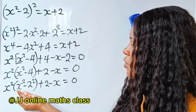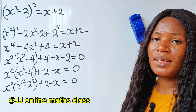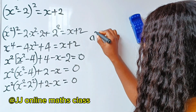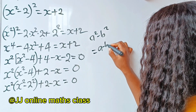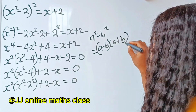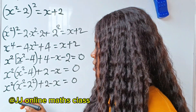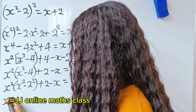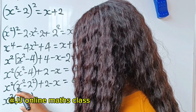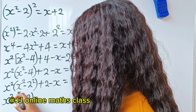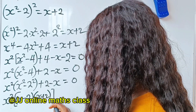Now you can see that we have a difference of two squares inside these brackets. So what we are going to do is apply the identity. The identity of a squared minus b squared is equal to a minus b multiplied by a plus b. So that means we can write this as x squared multiplied by x minus 2, multiplied by x plus 2.